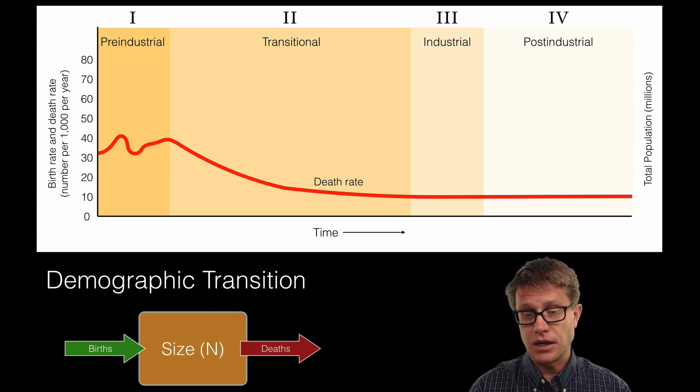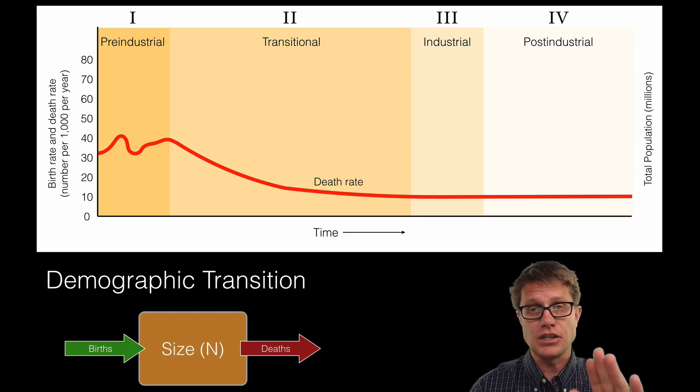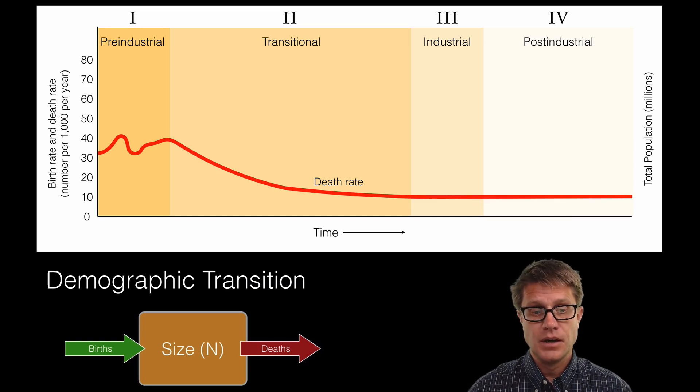So once we have access to constant food, sanitation, medicine, we are going to decrease that death rate profoundly. If we look at what happens to the birth rate over time, you will see that it also decreases.